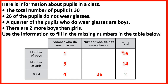Knowing there are 16 boys and 1 wears glasses, that means 15 boys do not wear glasses. For girls, 14 minus 3 is 11, so 11 girls do not wear glasses. The table is now complete.